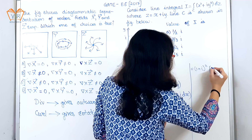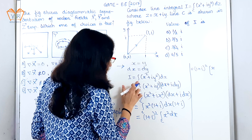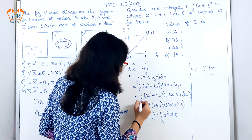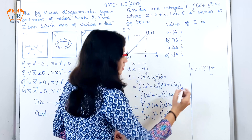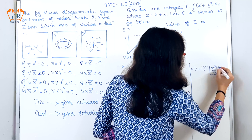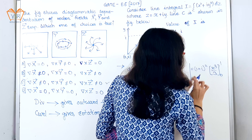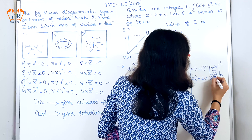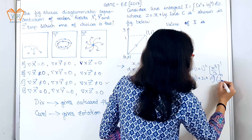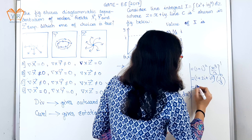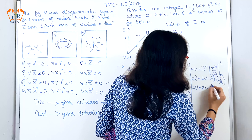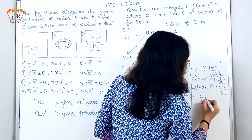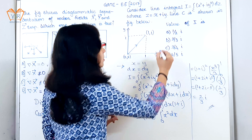We substitute the limits from 0 to 1, giving x³/3 evaluated from 0 to 1. Expanding (1 + i)² we get 1 + 2i + i². Substituting the limits we get 1/3, and since i² = −1, those terms cancel. We get 2i/3. Comparing with the options, option B is correct.